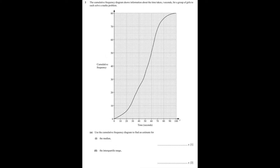In this exam question, the cumulative frequency diagram shows information about the time taken, t seconds, for a group of girls to each solve a maths problem. We have to use the cumulative frequency diagram to find an estimate for the median. The median is the middle value in a set of data when it's organised from smallest to largest. Before we can work out this middle value, we need to know the total frequency. If you look at the last part of the diagram and read off the corresponding value on the vertical axis over to the left, it's 80. This tells us that there are 80 girls altogether.